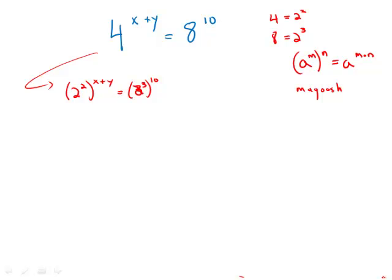So continuing here, we multiply the exponents, and what we get is 2 to the 2 times x plus y equals 2 to the 30th. Now that the bases are the same, we can set the exponents equal. 2 times x plus y equals 30.